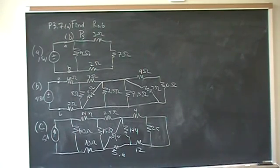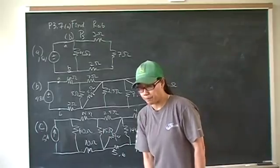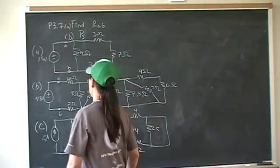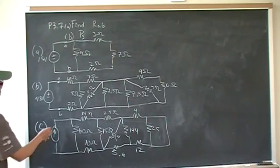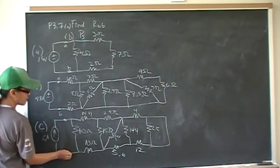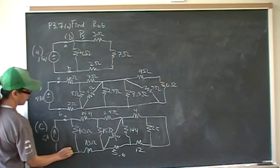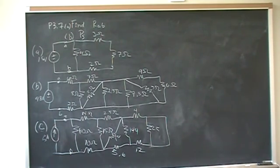Hey there, so this is problem 7 from chapter 3. We have three different circuits and we want to find the resistance seen at points AB and the power that's delivered by the source PS. Let's get started.